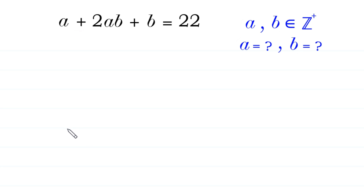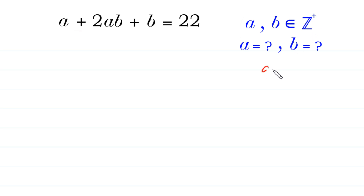Hello, welcome to how to solve this very nice Diophantine equation: a + 2ab + b = 22. We need to find all possible values of a and b, where a and b are positive integers — meaning a is greater than 0 and b is greater than 0.